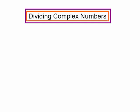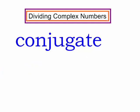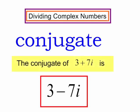We are going to divide complex numbers. When we divide a complex number by another complex number, it usually requires multiplying by the conjugate. The conjugate is where we change the sign in the middle of the two terms. The conjugate of 3 plus 7i is 3 minus 7i. Let's try dividing complex numbers.